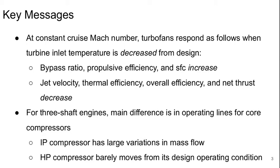For three-shaft engines, the main difference between these and a two-shaft engine is in the operating lines for the core compressors. The intermediate pressure compressor has quite large variations in mass flow in this kind of engine, while the high pressure compressor barely moves from its design point during any excursions from design for the overall engine.